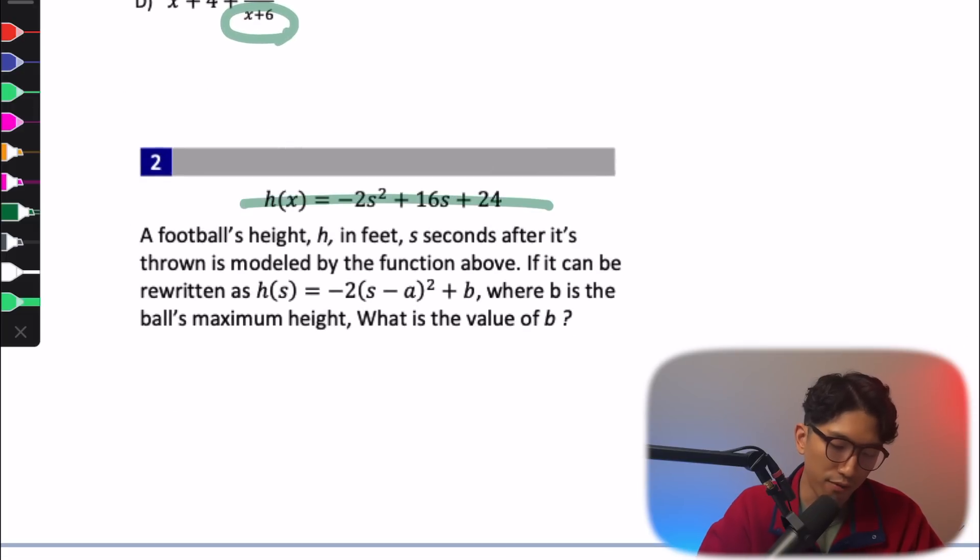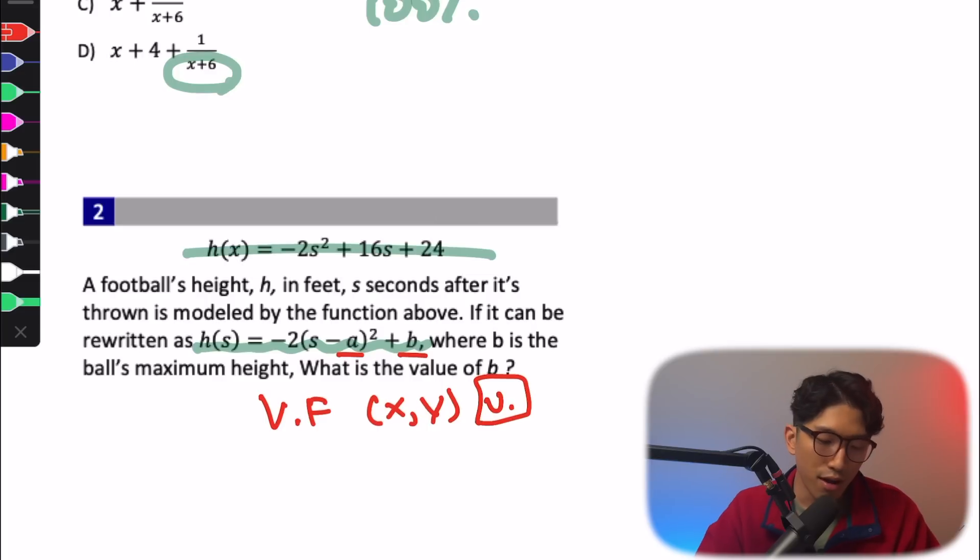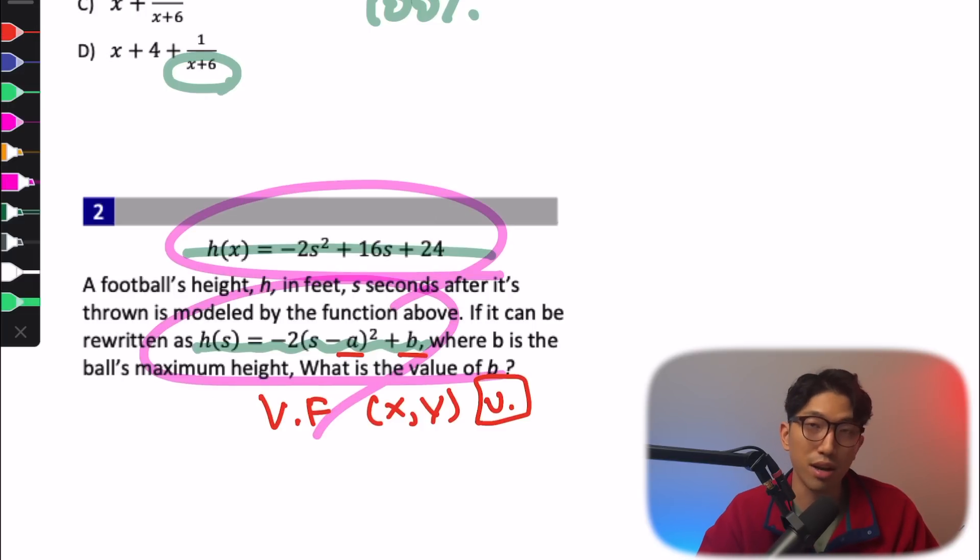Next, whenever you're working with a quadratic function and the question is giving you this structure right here, you recognize that this is actually a vertex form where A and B represents the X and Y coordinate of the vertex. You see what happened there? I just saw the question and I knew exactly what to look for. I didn't even have to read the whole question. My eyes just caught up onto the right things to look at.